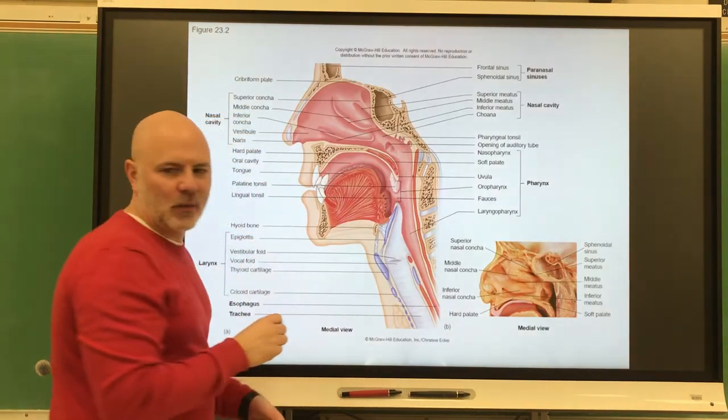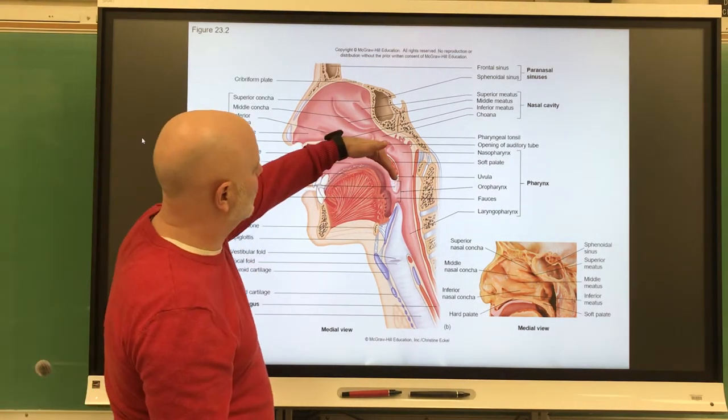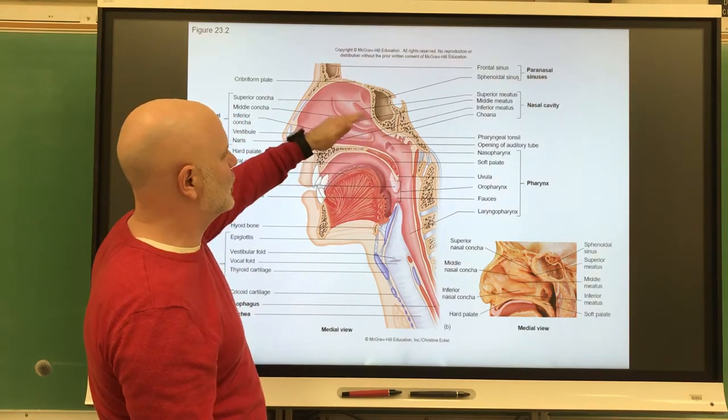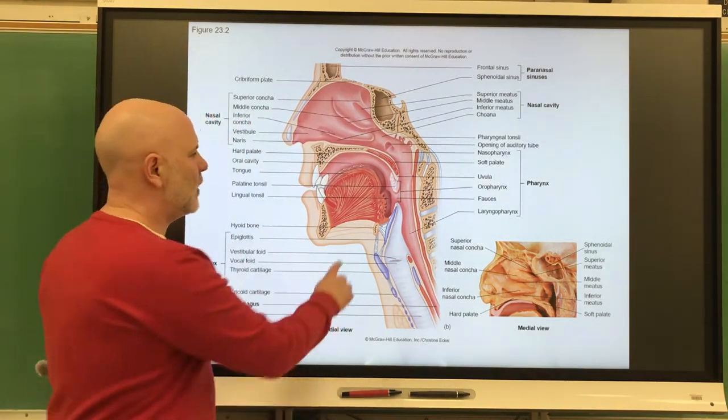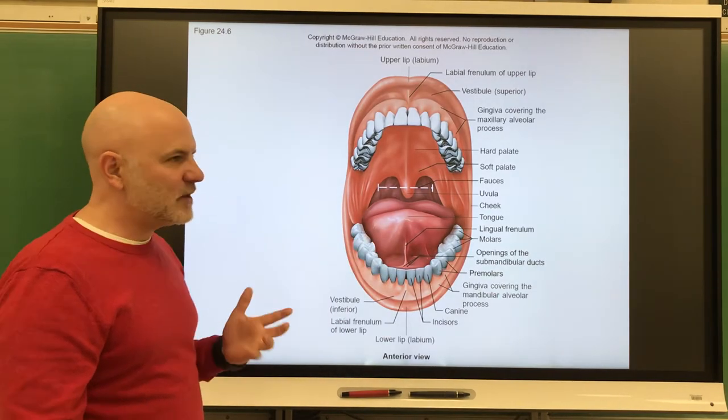So when we swallow, we'll talk about swallowing in a little bit, but when we swallow this moves up to block off that nasopharynx so we don't push food up there. If we go back to this previous picture, we can see this thing right there and that is called the frenulum.